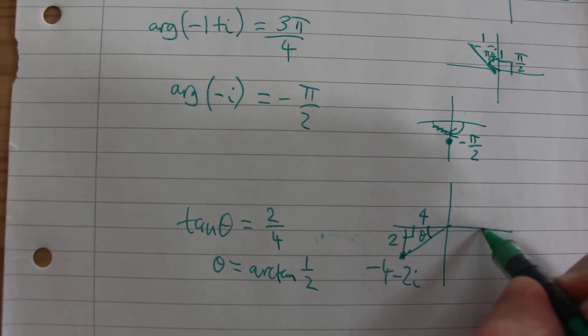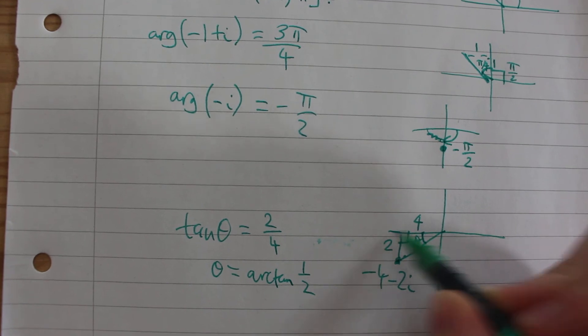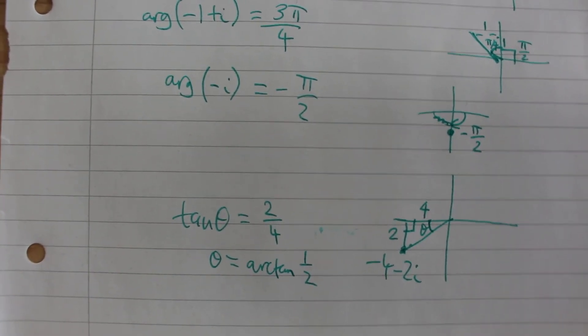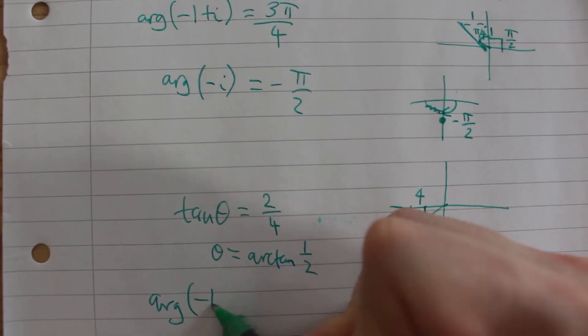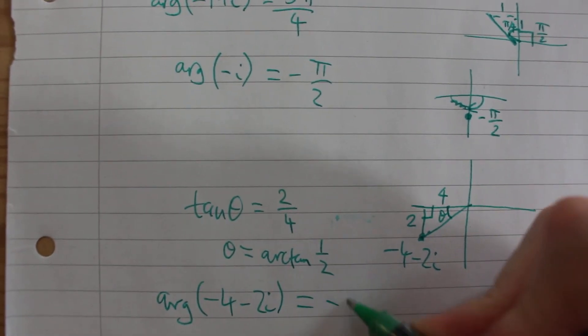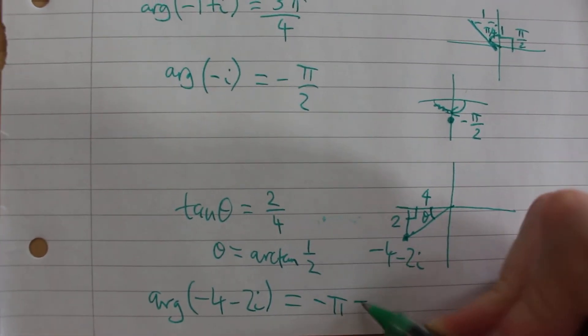And then to find the principal argument, well if we were to go back all the way from 0 to over here we would get minus pi. So the principal argument of minus 4 minus 2i is going to be minus pi plus this angle theta.